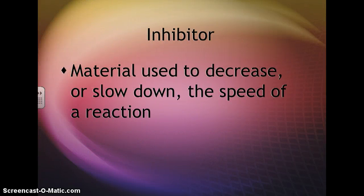An inhibitor is kind of the opposite of a catalyst. A catalyst speeds things up by lowering that activation energy, but an inhibitor inhibits — it slows down the speed of a reaction.